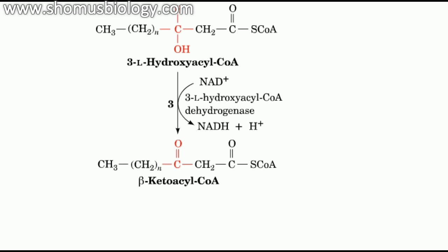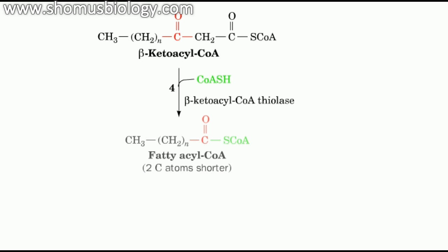The third step is NAD plus dependent dehydrogenation of the hydroxyl group by the enzyme 3L-hydroxyacyl-CoA dehydrogenase to form the corresponding beta-ketoacyl-CoA. This reaction also generates NADH, which is a reduced form of NAD. We use this NADH through electron transport chain to produce energy.